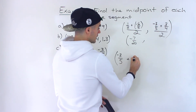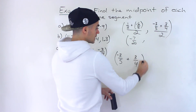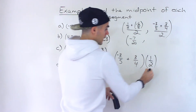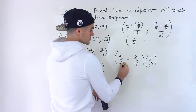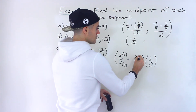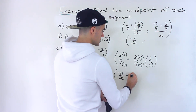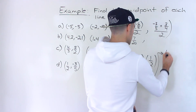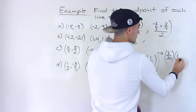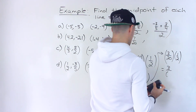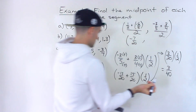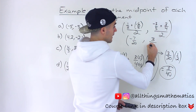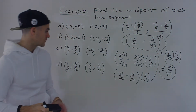For the y value: (-3/5) + (3/4) divided by 2, which is like multiplying by 1/2. Common denominator between 5 and 4 is 20. We get -12/20 + 15/20. Work the bracket first: -12 + 15 = 3, so 3/20 multiplied by 1/2. 3 × 1 = 3 and 20 × 2 = 40, giving us 3/40. So the y value of the midpoint is 3/40, and the final answer for part D is (-7/20, 3/40).